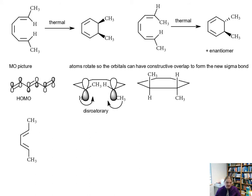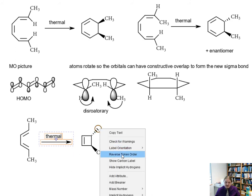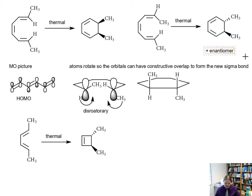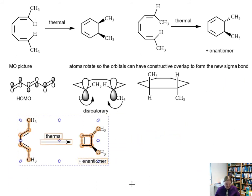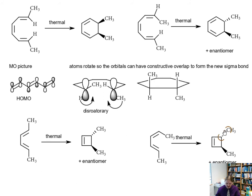Here is the four-carbon version. Under thermal conditions, the four-carbon version has a different stereochemical outcome than the six-carbon version — and you might be surprised at that. But as soon as we look at the molecular orbitals we can see why. The situation where both methyl groups are facing outward leads to the anti version, and if we have one methyl group facing inward, that leads to the syn.